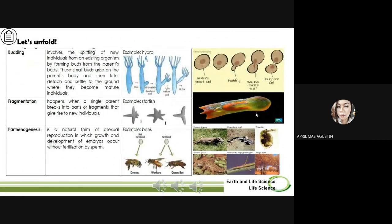Let us now look at the different examples of asexual reproduction. The first one is budding. Budding is a type of asexual reproduction in which a new organism develops from an outgrowth or bud due to cell division at one particular site. The small bulb-like projection coming out from the yeast cell is called a bud. Budding involves the splitting of new individuals from an existing organism by forming buds from the parent's body. These small buds arise on the parent's body and later detach and settle to the ground where they become mature individuals. Another example of budding is the hydra.